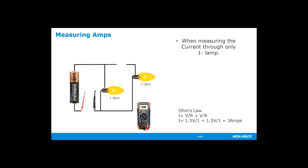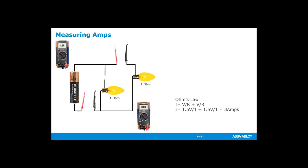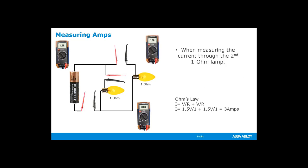When the current is measured through only one of the lamps, the 1-ohm lamp will only allow so many amps through the light. The 1.5 volts passing through that 1-ohm lamp will only allow 1.5 amps of current to flow. When measuring current through the second 1-ohm lamp, the current remains the same since both lamps are 1-ohm lamps. Only when we measure at the very beginning before it separates is it going to be three amps. When we measure on each of the individual lights, it's only going to be 1.5 amps because we've given two paths — adding the two paths together, 1.5 plus 1.5 gives us the three amps.